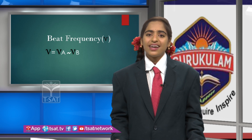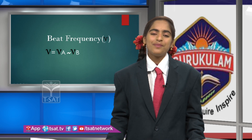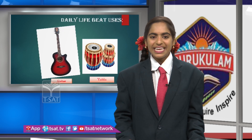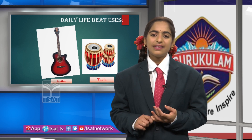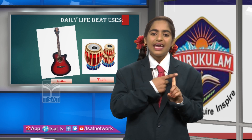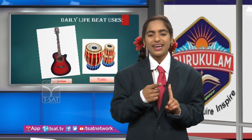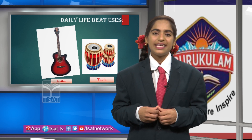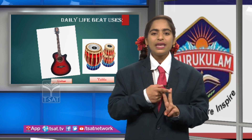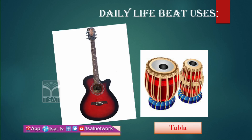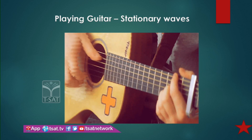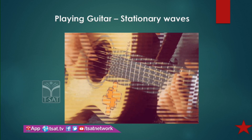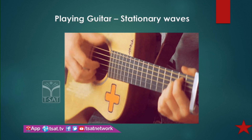In our daily life, beat examples include musical instruments. Beats are useful in musical instruments and in detection of coal mines. Musical instruments include guitar and tabla. When the guitar is played, the person playing the strings produces stationary waves.